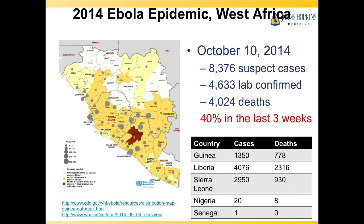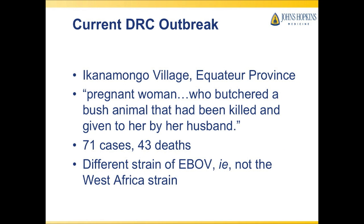In the Democratic Republic of Congo, there is actually a separate outbreak that began in the equatorial province, in an area very similar to where some of the original outbreaks occurred. It began with a pregnant woman who butchered a bush animal that had been killed and given to her by her husband. Since then, they've had 71 cases and 43 deaths, though it does appear that the outbreak is slowing down.